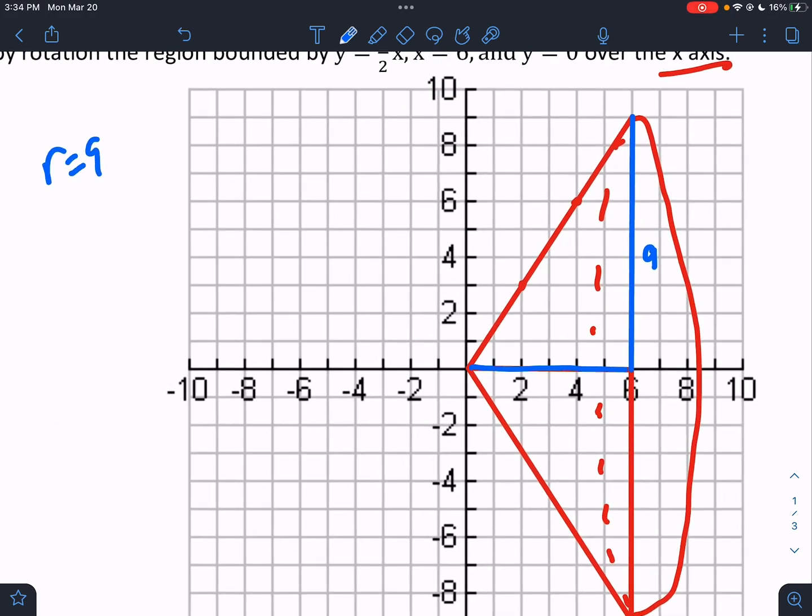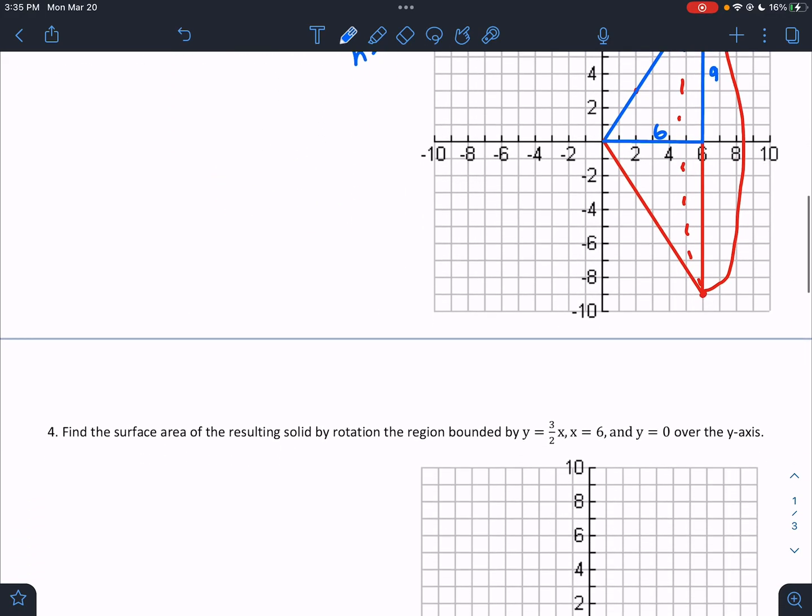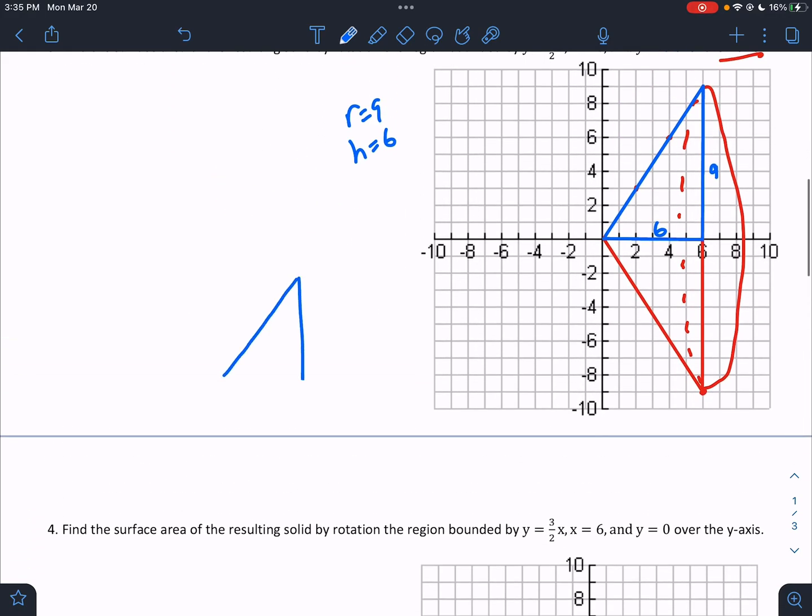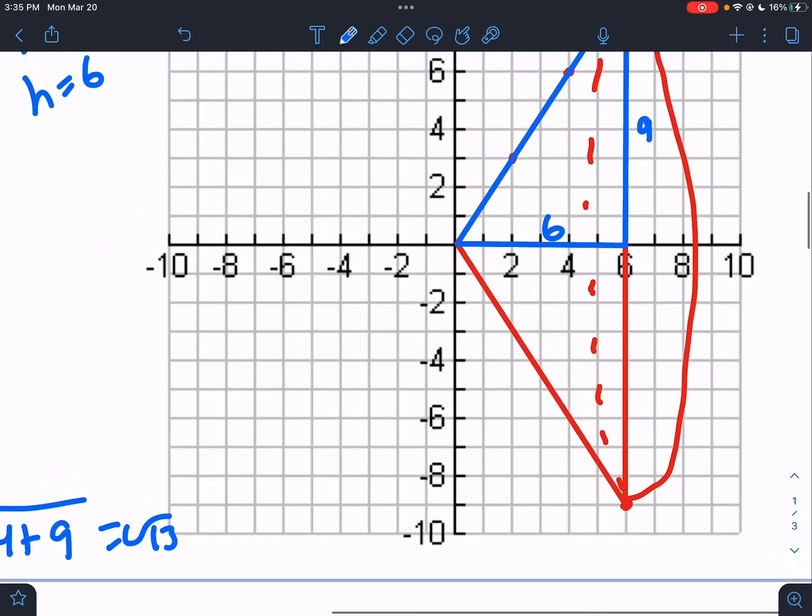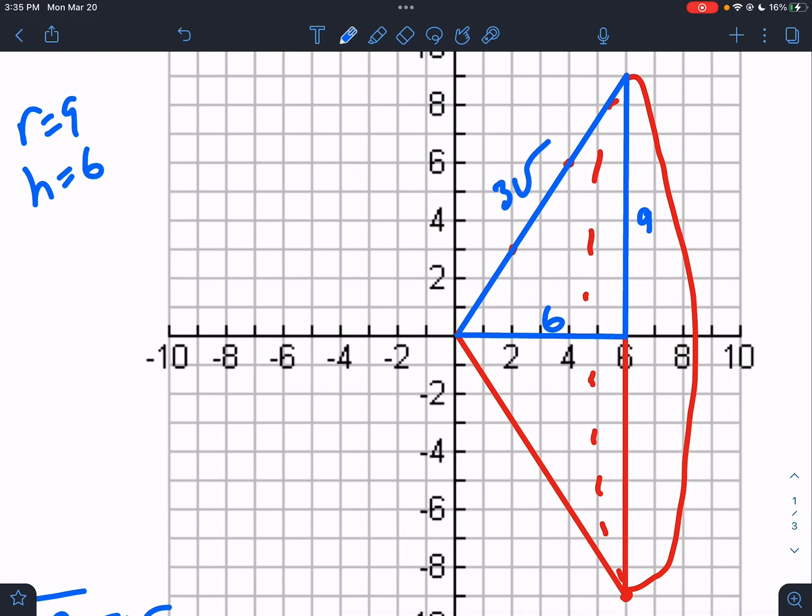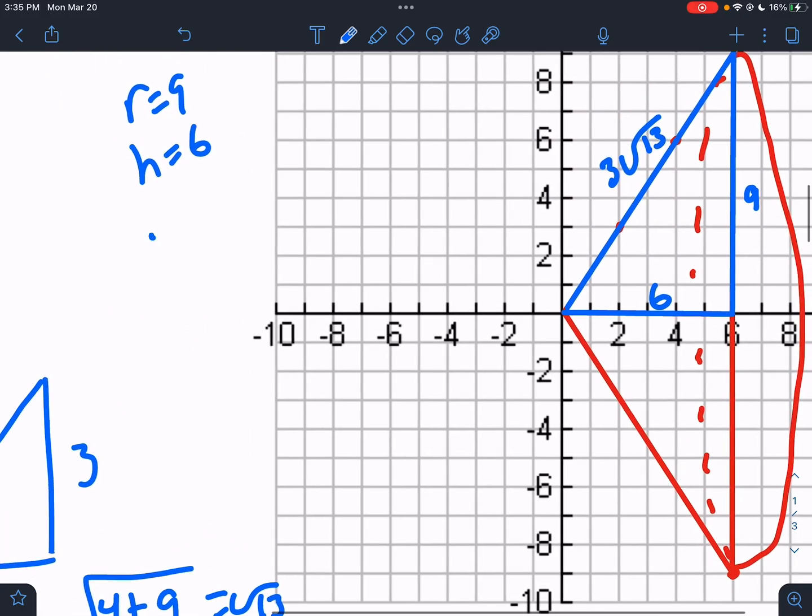So the radius is going to be the vertical line, right? If the circle is spinning vertically, the radius is going to be vertical. That's 9. So we know that the radius is 9. The height is from 0 to 6. 6. And the slant height we need to find. So I'm going to draw a smaller version of that triangle. Divide by 3. 9 divided by 3. 6 divided by 3. This would be 4 plus 9, which is root 13. But we have to multiply the 3 back in. That's 3 root 13. So the slant height is 3 root 13.